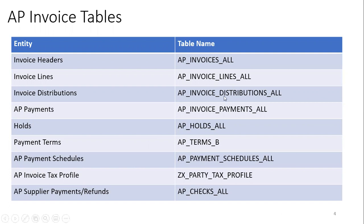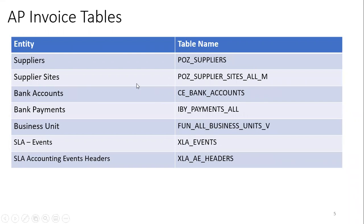When dealing with payments — for example, the payment schedule from payment terms determines whether you repay within one month or six months — you'll have the appropriate scheduling. Based on the amount paid to the supplier, whether via bank integration or manually, the payment data is stored in AP_INVOICE_PAYMENTS_ALL and AP_PAYMENT_SCHEDULES_ALL. The tax profile will be the supplier's tax profile. For bank integration, you also reference the bank accounts table and the IBY_PAYMENTS_ALL table, which holds banking information. When posting to GL, the two important tables are XLA_EVENTS and XLA_AE_HEADERS, which provide the linkage between AP invoices and the general ledger.